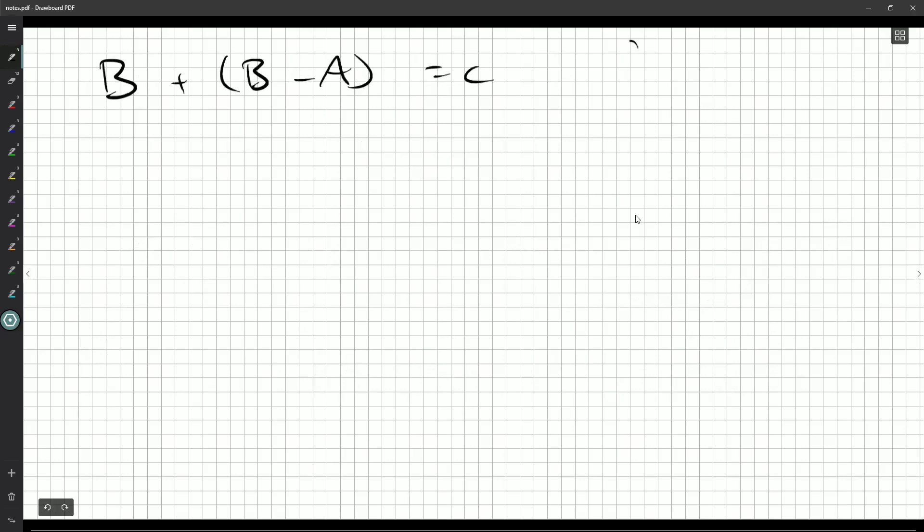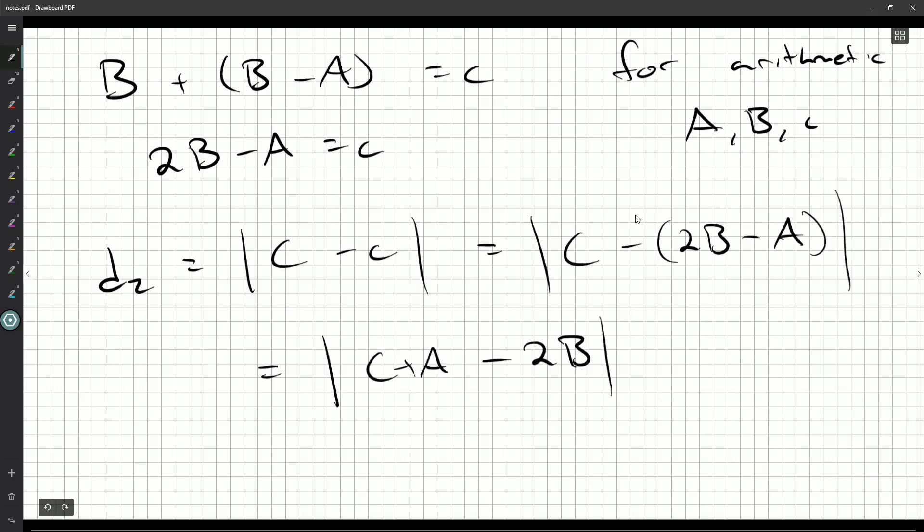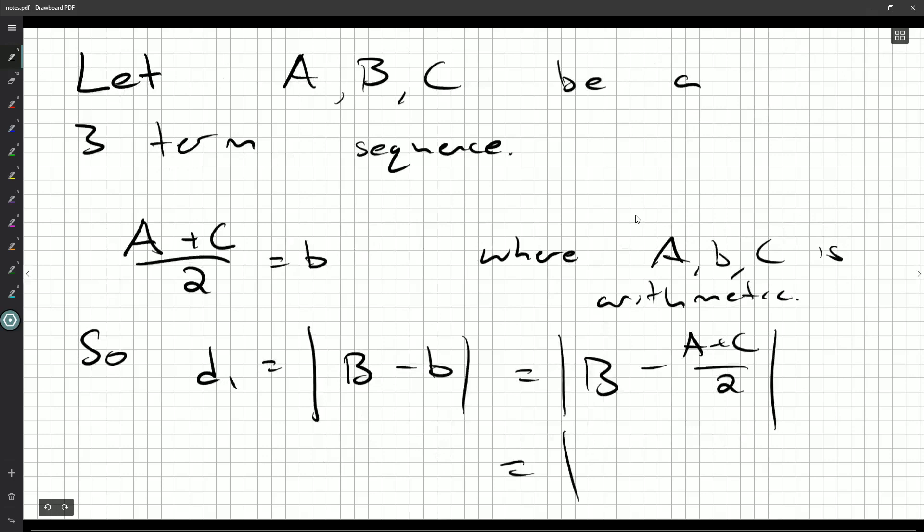B plus B minus A should be equal to our C value, the C if it were for arithmetic sequence A, B, little c. So that's 2B minus A is equal to C. So D2 is equal to C minus C, which is equal to C minus 2B minus A. So that's C plus A minus 2B. But that's 2 times C plus A over 2 minus B.